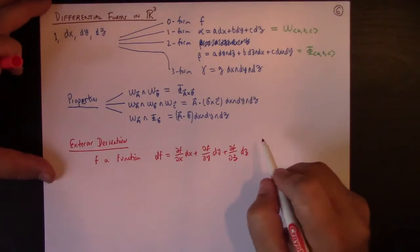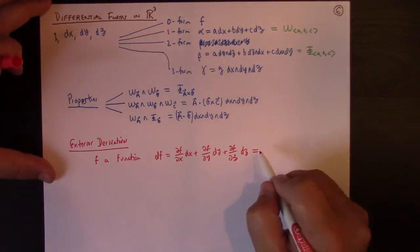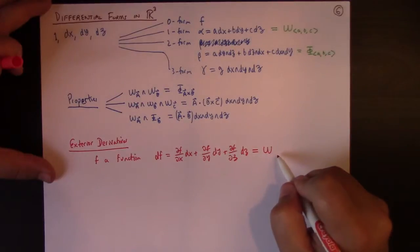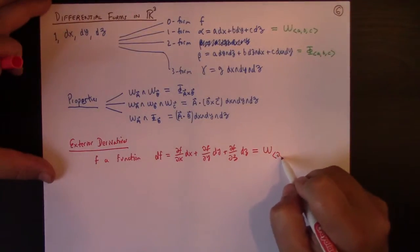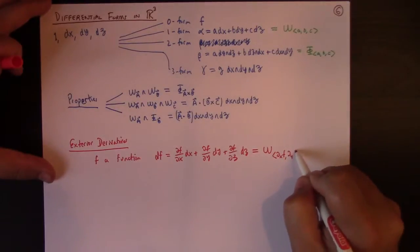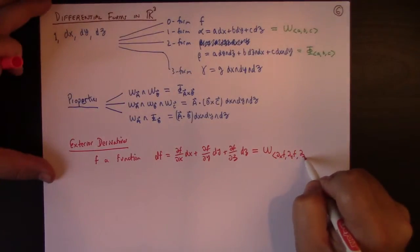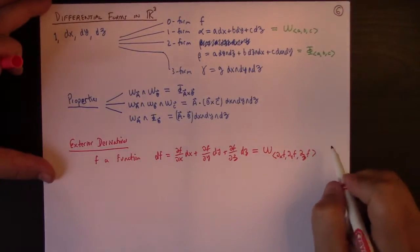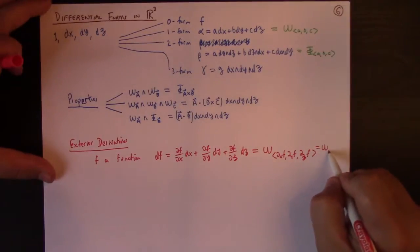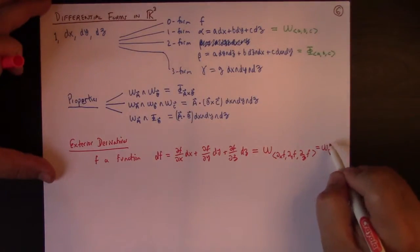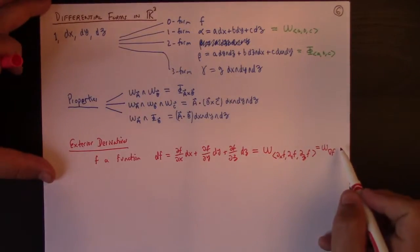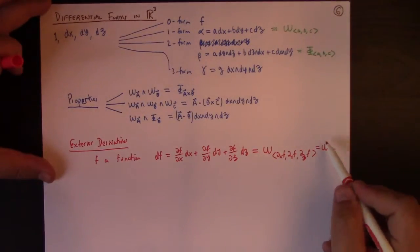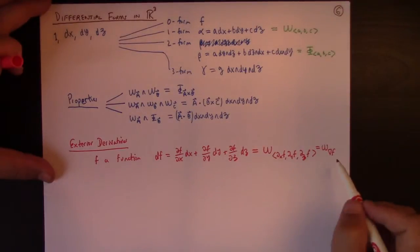Of course, what is that? Well, this is exactly the work form corresponding to the vector, partial xf, partial yf, partial zf. Well, what is that? That's the work form of the gradient of f.